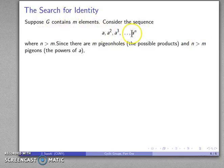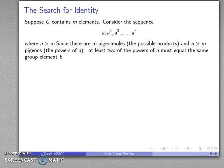But there's N greater than M pigeons. These are the powers of A. Because I have more pigeons than pigeonholes, then at least two pigeons have to be assigned to one pigeonhole. Well, two powers of A have to be assigned to the same product. And so that tells me they have to be equal to the same group element B.